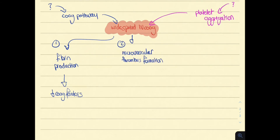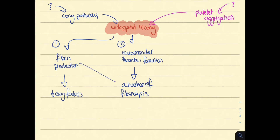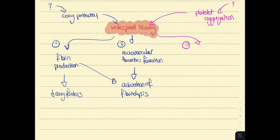Second, micro and macrovascular thrombus formation. If you remember from our video on secondary hemostasis, every time a thrombus is formed, the fibrinolysis pathway is activated. Fibrin production also activates fibrinolysis. And third, platelet consumption, which leads to thrombocytopenia.